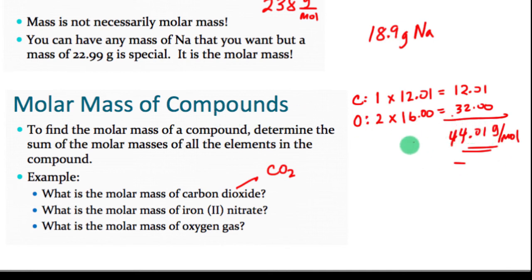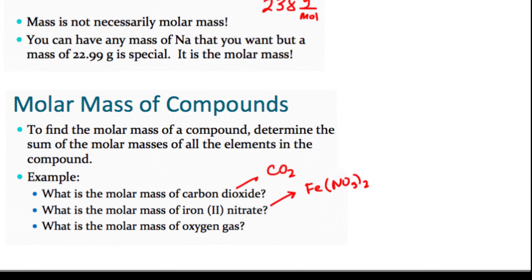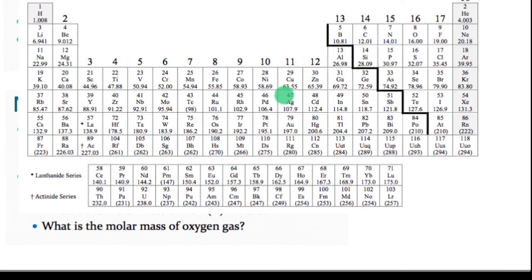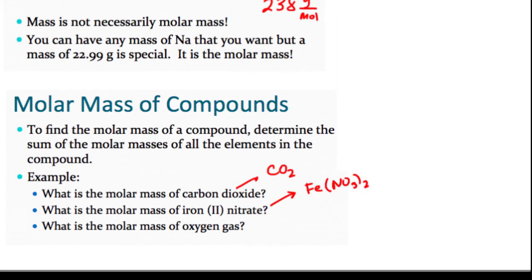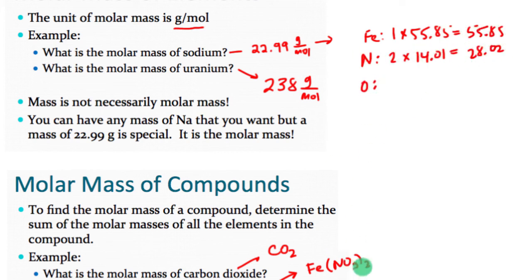For iron(II) nitrate, the formula is Fe(NO₃)₂. To get the molar mass, I go to the periodic table: iron is 55.85, and there is one of them.